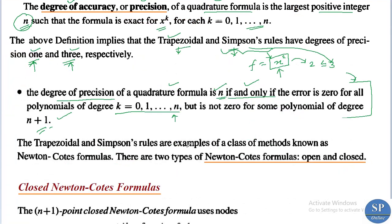The trapezoidal rule and Simpson's rules are examples of a class of methods known as Newton-Cotes formulas. There are two types of Newton-Cotes formulas: open Newton-Cotes formulas and closed Newton-Cotes formulas. In this lecture, we will discuss only closed Newton-Cotes formulas.